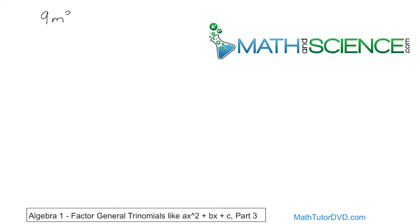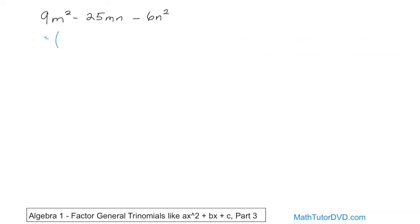9 times m squared minus 25 times m times n minus 6n squared. We want to factor that. So here we have a trinomial.